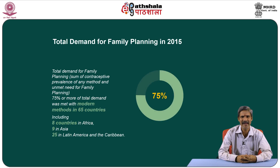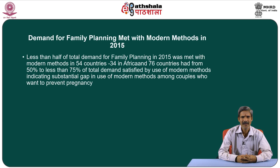The total demand for family planning is the sum of contraceptive prevalence of any method and unmet need for family planning. 75 percent or more of total demand was met with modern methods in 65 countries, including 8 in Africa, 9 in Asia, and 25 in Latin America and the Caribbean. Less than half of total demand was met with modern methods in 54 countries, with 34 of those being from Africa. 76 countries had between 50 and 75 percent of total demand satisfied by modern methods, indicating a substantial gap among couples desiring to prevent pregnancies.